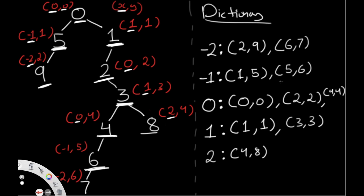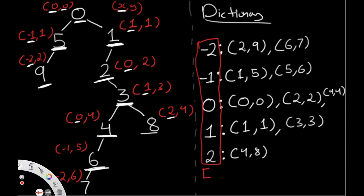After filling the dictionary, we build our output array. We sort the dictionary keys first — from -2 up to 2 in ascending order. Then for each key's list of values, we use Python's sorted function. For example, at key -2 we have tuples (2, 9) and (6, 7) — since 2 is less than 6, we add 9 first, then 7.